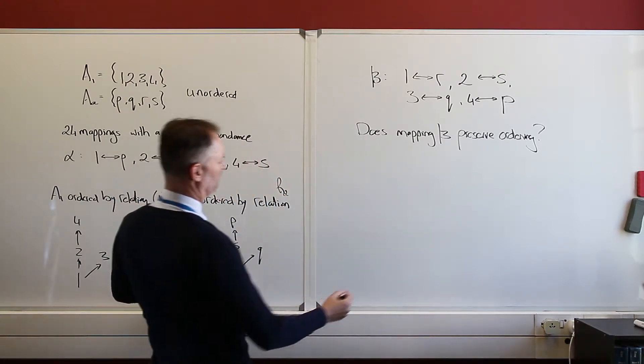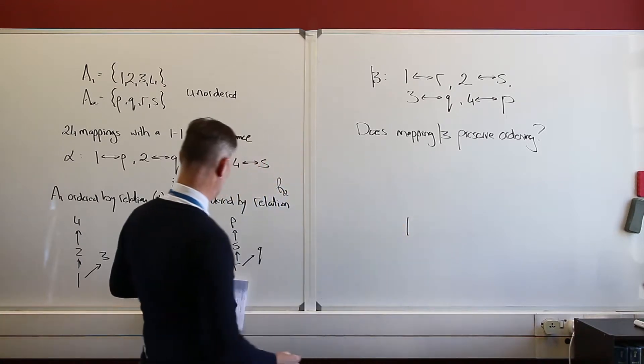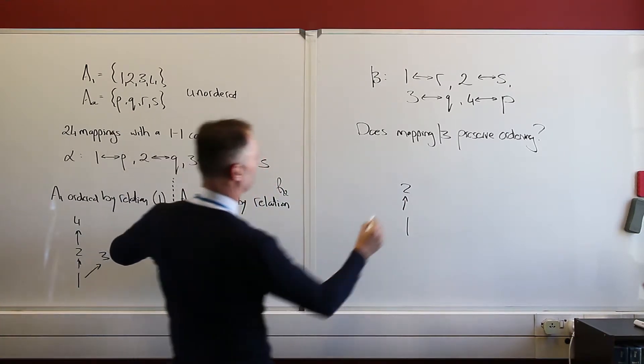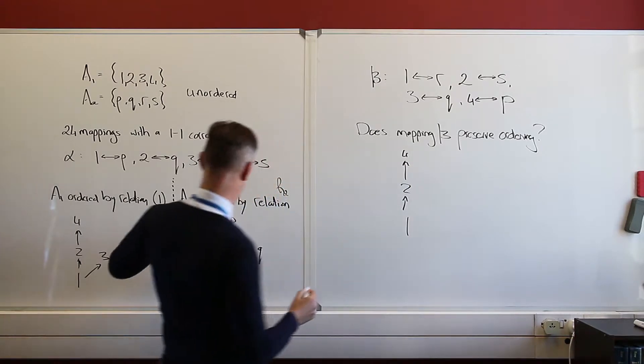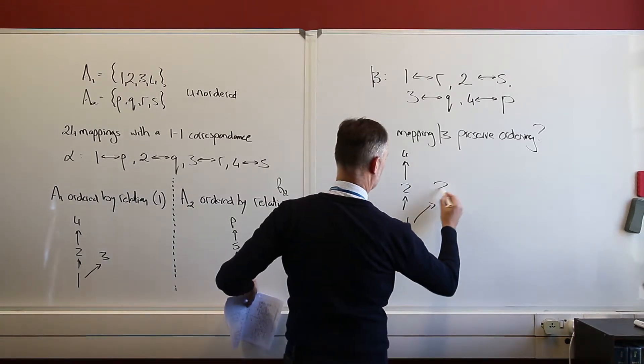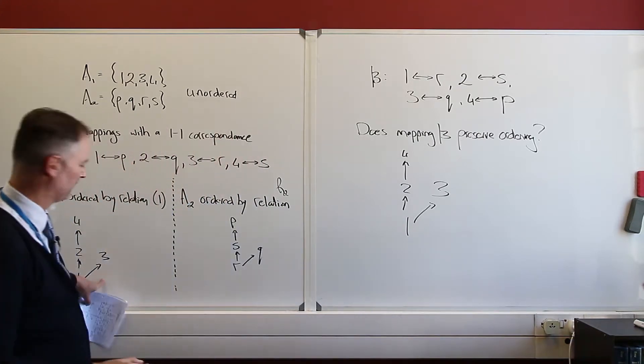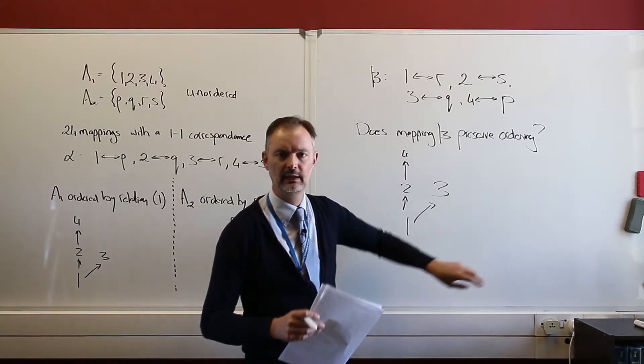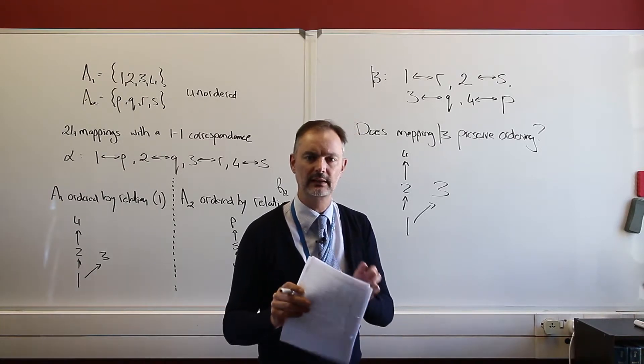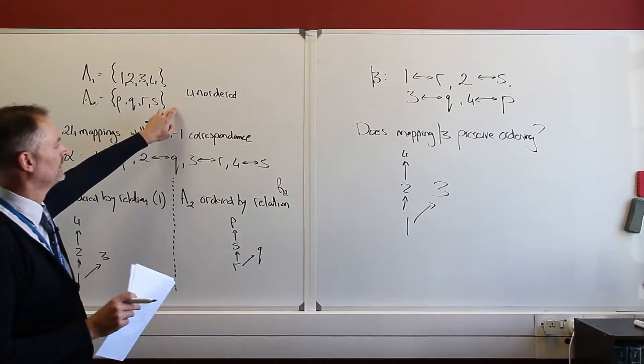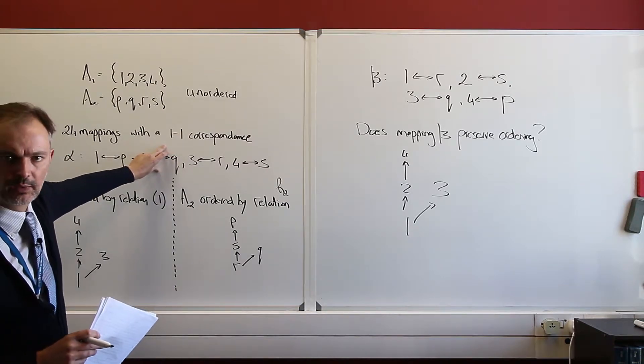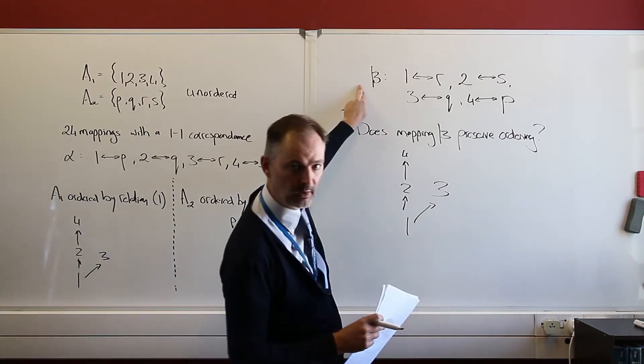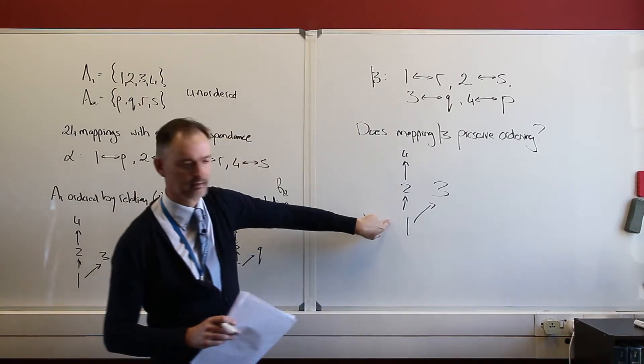So instead of r, I can put 1. Instead of s, I can put 2. Instead of p, I can put 4. And instead of q, I can put 3. And I can do it the other way around as well. And what do I get? I get exactly that ordering. So this mapping has preserved my ordering. So there's one bit of our isomorphism that you understand quite well now. Unordered set, 24 mappings with 1 to 1 correspondence. I bring in an ordering relation on them. I take one of my mappings with 1 to 1 correspondence and it preserves this ordering.